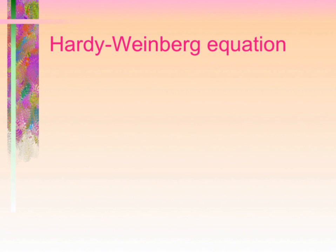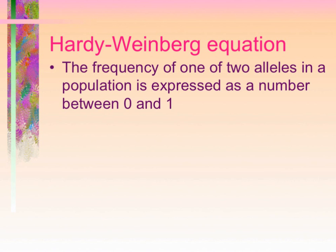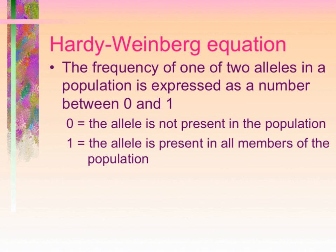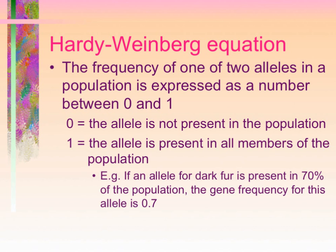The Hardy-Weinberg equation: the frequency of one of two alleles in a population is expressed as a number between 0 and 1. Zero represents the allele not present in the population, and 1 means the allele is present in all members. For example, if an allele for dark fur is present in 70% of the population, the gene frequency for this allele is 0.7. If dark fur is dominant, that 70% is divided into homozygous dominant and heterozygous individuals, while the 30% having the recessive allele is divided into homozygous recessive and heterozygous individuals — so not all 30% show the recessive phenotype.